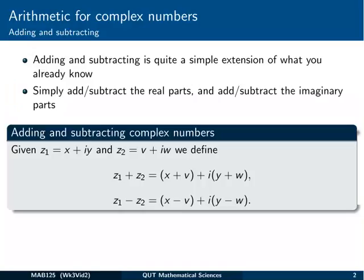So first of all, the easy ones. Adding and subtracting of complex numbers when they're written in Cartesian form is actually quite a simple extension of what we already do. Basically, it's just combining like terms, so it is exactly what we normally do.